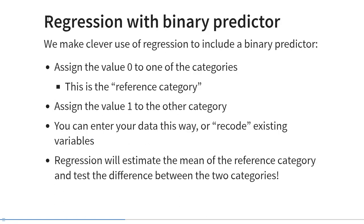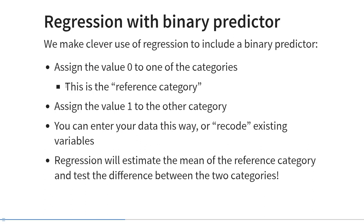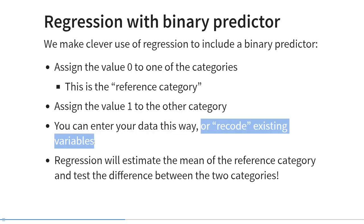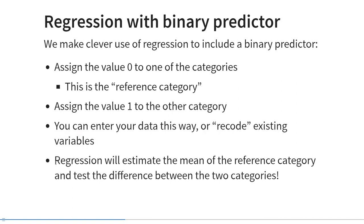When we conduct regression with a binary predictor, we make clever use of the properties of regression analysis to include a binary predictor as a dummy variable. Recall that in dummy coding we assign the value 0 to one of the categories — called the reference category — and we assign the value 1 to the other category. You can either enter your data this way or recode existing variables. Using dummy coding, regression analysis will then estimate the mean of the reference category and test the difference between the two categories.